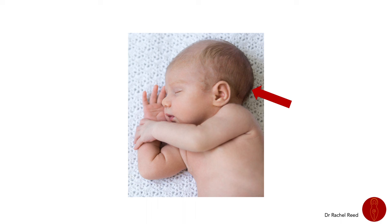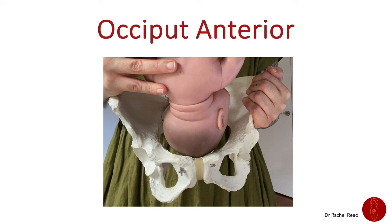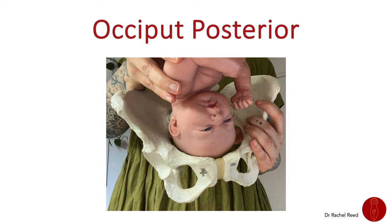The position of a head-down baby in their mother's pelvis is defined by where their occiput is, and the occiput is at the back and bottom of the skull. So an occiput anterior position is when the baby's occiput is in the front of the mother's pelvis, i.e. anterior. An occipital posterior position is when the baby's occiput is in the back of the mother's pelvis, i.e. posterior.